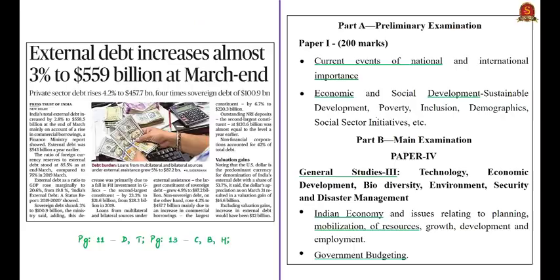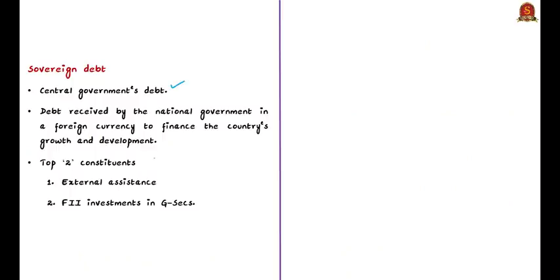This news article talks about sovereign debt and external debt. India's total external debt increased by 2.8% to 558.5 billion US dollars from 543 billion a year earlier. Before understanding why this debt increased, let us see the basics. Sovereign debt is the central government's debt — the debt received by the national government in foreign currency to finance the country's growth and development. All kinds of liabilities of the government to foreign individuals and institutions are counted.